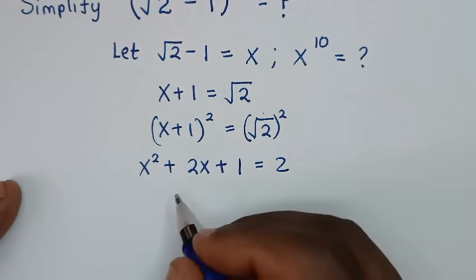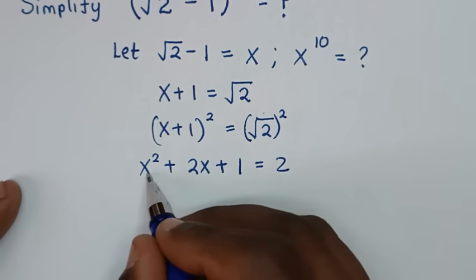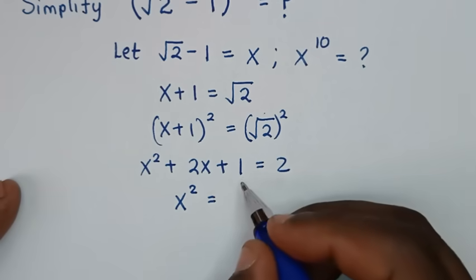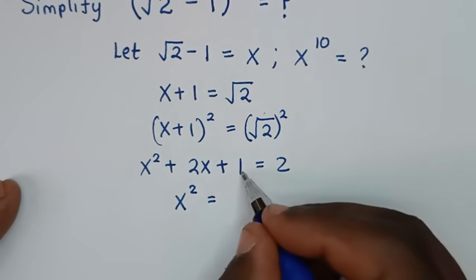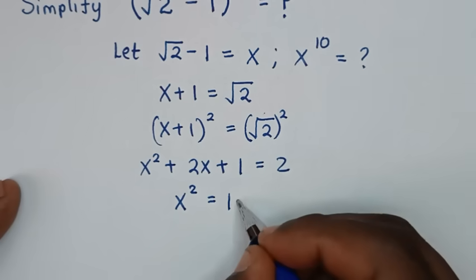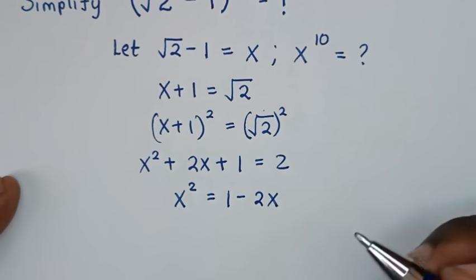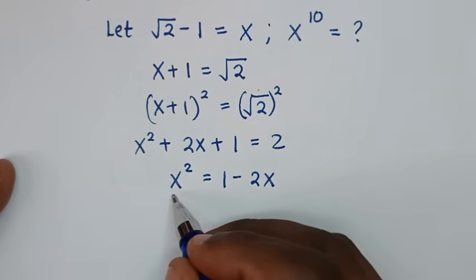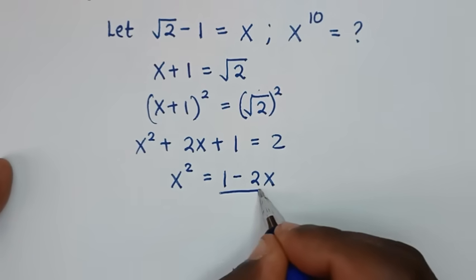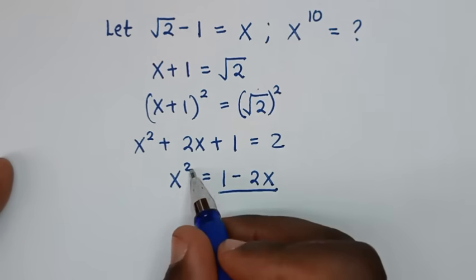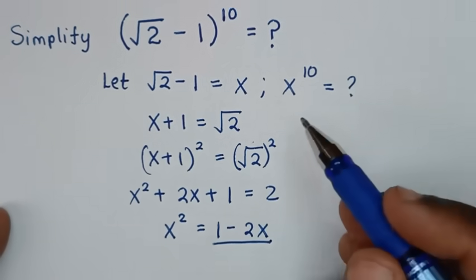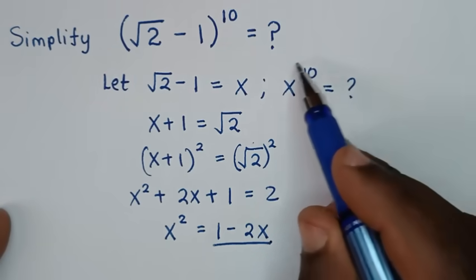From here we'll take x squared to one side. So x squared equals 2 minus 1 minus 2x, which gives us x squared equals 1 minus 2x. Now we'll use this relation and multiply up to get x to the power of 10.